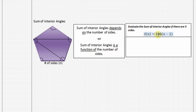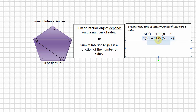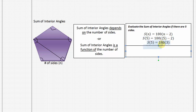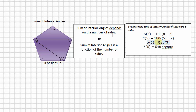The formula is 180 times the quantity (n minus 2). We want to evaluate and find the sum of the interior angles for a pentagon, a polygon with five sides. Following our example from above, substitute 5 in for n in both sets of parentheses, then follow order of operations. Since parentheses come first, we do 5 minus 2, which is 3, and then multiply that by 180. The sum of the interior angles for a five-sided polygon is 540 degrees.